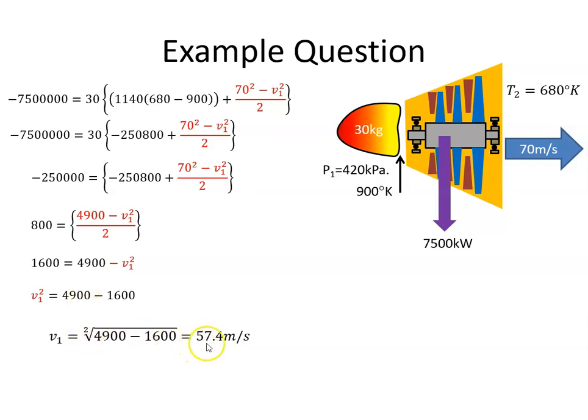From that, I can work out what V1 is. It works out to be 57.4 meters per second. That's the first part of the question.